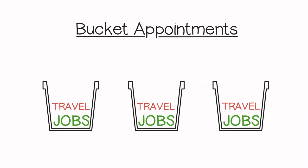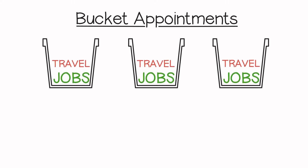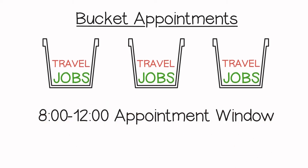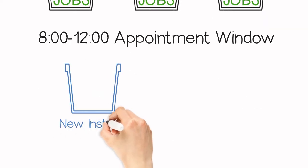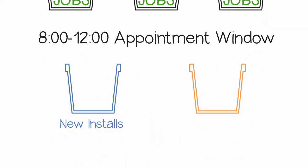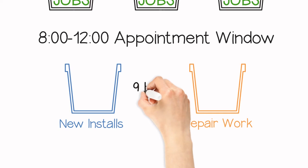Each bucket represents a different job type. For example, let's take the 8 to 12 appointment window on one day. To keep it simple, let's say you have one bucket for new installs and one bucket for repair work. Each bucket has nine hours of capacity.